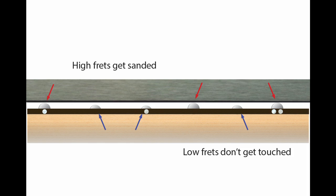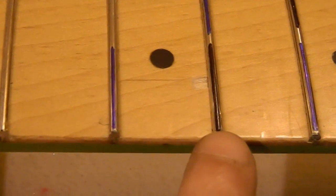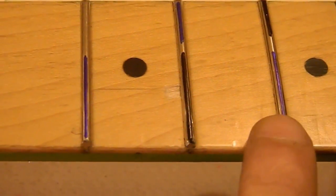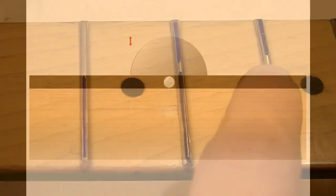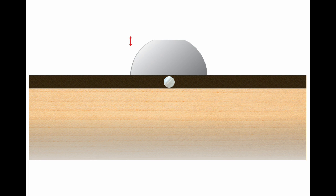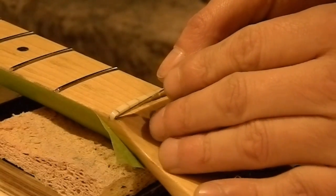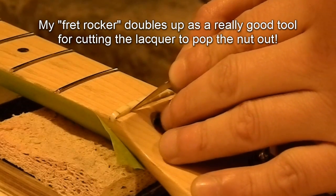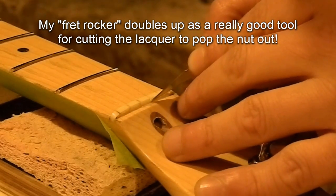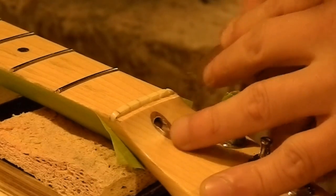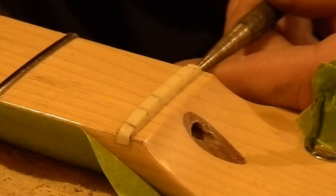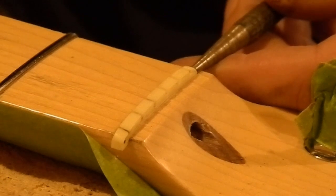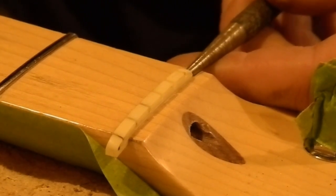In order to keep an eye on what we're doing, I'm going to mark the frets either side of the high frets with a different color marker pen, just to see if they're getting touched. What we want to do here is take as little material off the frets as possible but get them dead level.